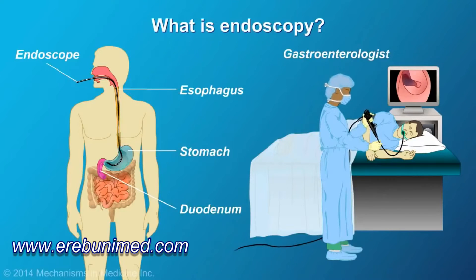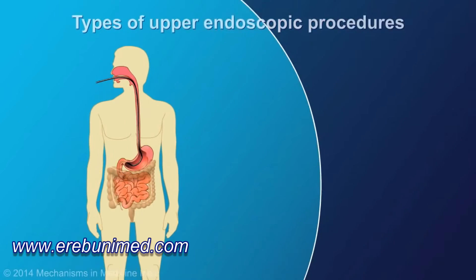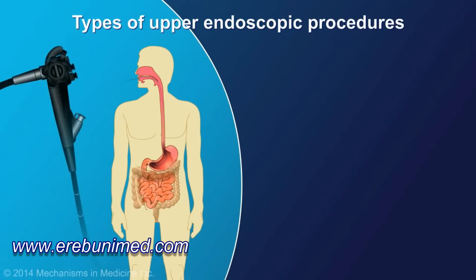Gastroenterologists use endoscopy to view a patient's GI tract and may employ a variety of endoscopic procedures. Depending on what is being examined, several other types of endoscopic procedures can be used.